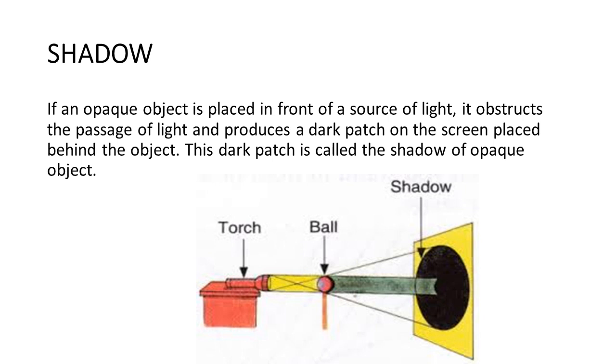Why is a shadow formed? Let's understand. A shadow is formed because light travels in a straight line. The rays that fall on the opaque object are blocked. Due to this, they do not reach the screen.